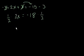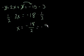So 1 half times 2x, well, that's just 1x. So you get x equals, and then minus 18 over 2. And minus 18 over 2, well, that just equals minus 9.